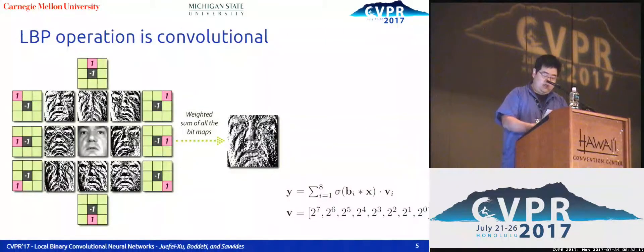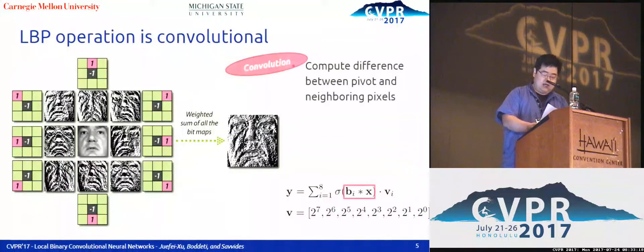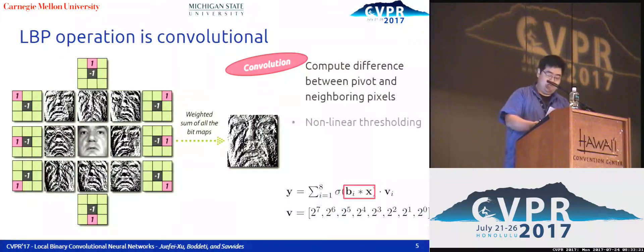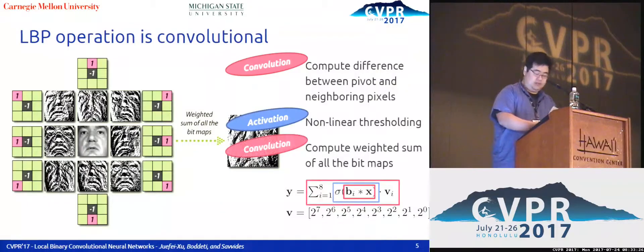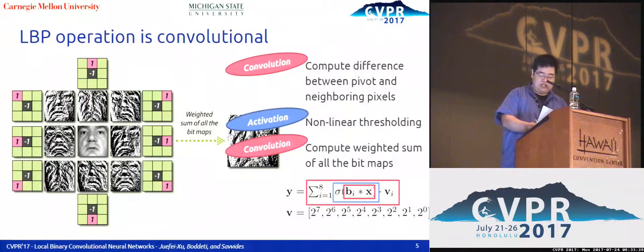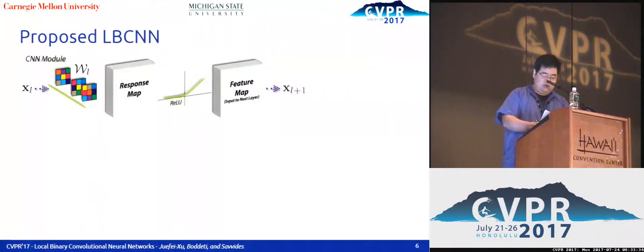The LBP operation is naturally convolutional. Step one is to compute the difference between the pivot and neighboring pixels, which is convolutional with binary filters. Step two, the bitmap thresholding is equivalent to a nonlinear activation. Step three, the weighted sum of the bitmaps can also be considered convolution.